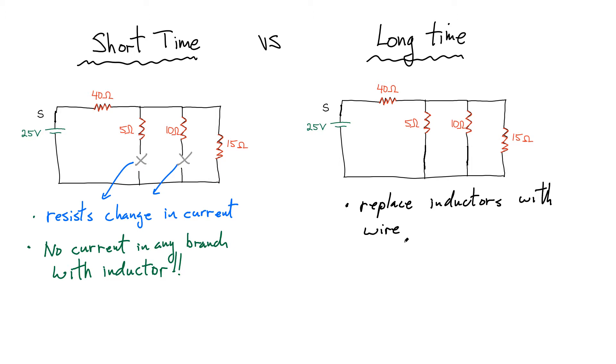so there's no more resistance to changing current in those wires. Now let's treat both of these cases and find the current in each branch for the short time and the long times. Let's do the short time since this one's much easier.